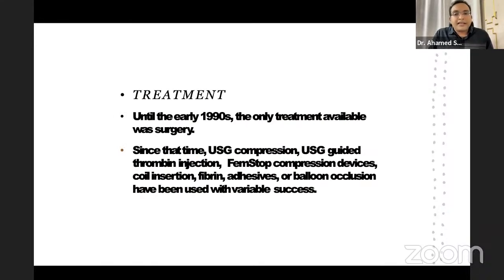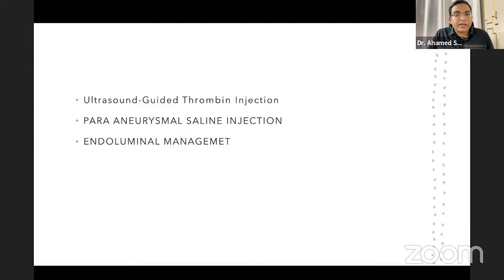Until the 1990s, the only treatment was surgery if the patient developed pseudoaneurysm with complications. Later, ultrasound-guided compression, thrombin injection at the site, femstop compression devices, coil insertion, fibrin, and balloon occlusion were introduced. Treatment options include: ultrasound-guided thrombin injection, paraaneurysmal saline injection at the neck of the aneurysm to occlude it and reverse flow into the aneurysm, and endoluminal management. Commercially available thrombin is used in 1–2 ml doses.